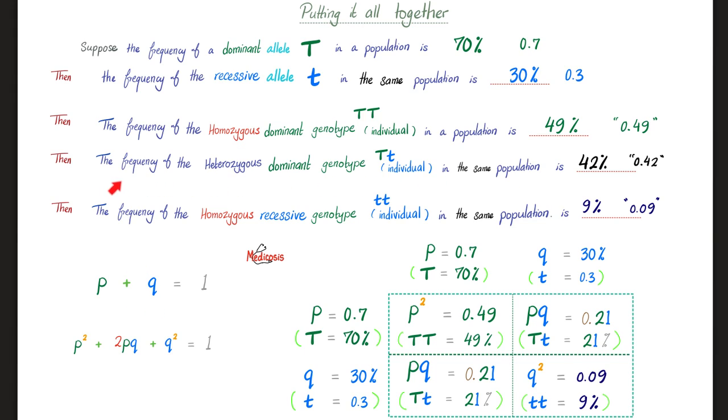Now, what did the question ask about? The frequency of the heterozygous dominant. They want the 2 P Q. So here is the 2, times P, which is 0.7, times Q, which is 0.3. Guess what the answer is? 42%, which is 0.42.